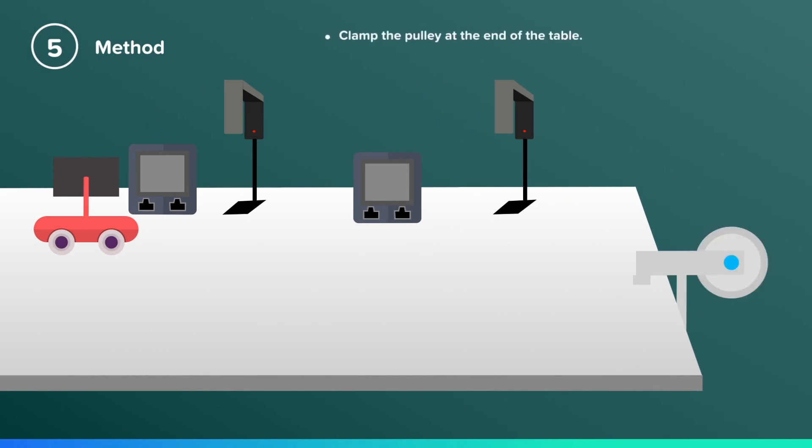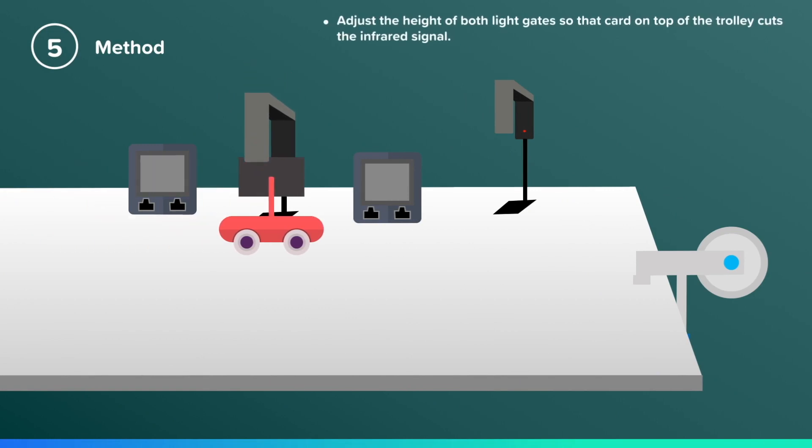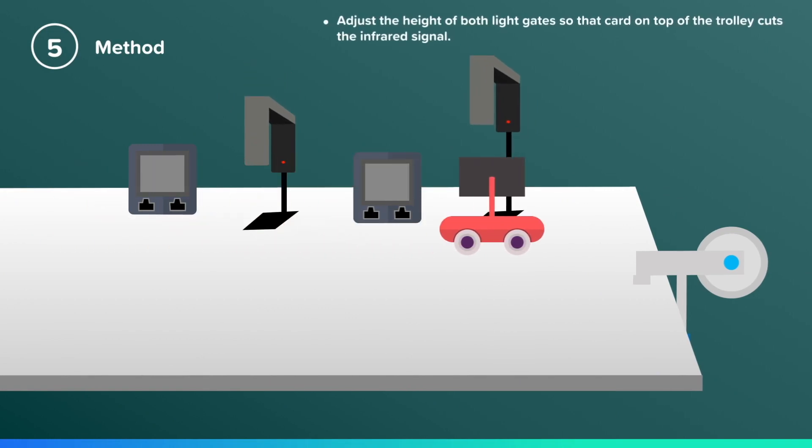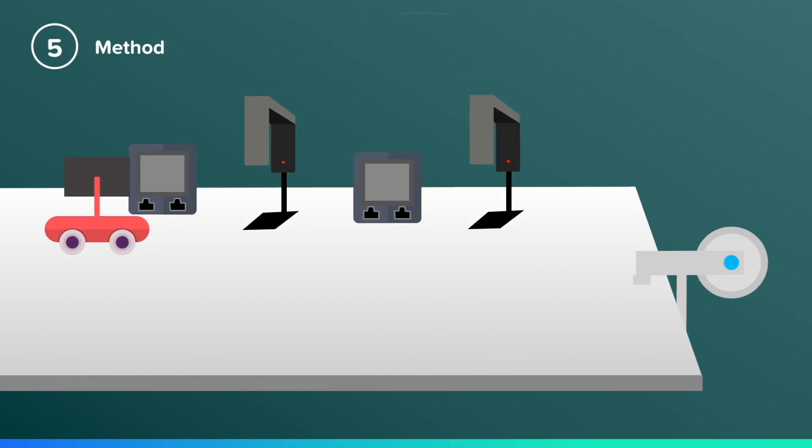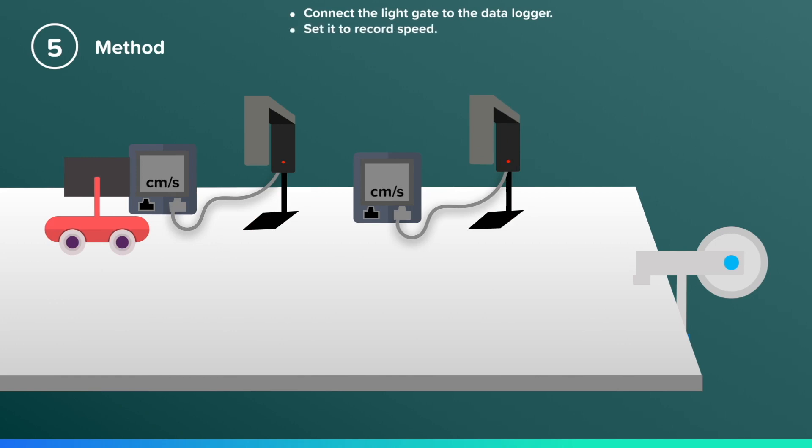Clamp the pulley at the end of the table securely. Adjust the height of both light gates so that the card on top of the trolley cuts through the infrared signal. Then connect your light gates to the data loggers. Set both of them to record speed, and make sure the two light gates are a reasonable distance apart. One meter is good.